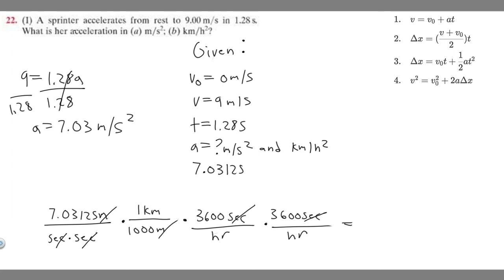If you go ahead and do this, take 7.03125, multiply it by 3,600 times 3,600, then divide by 1,000. You're going to get 91,125.